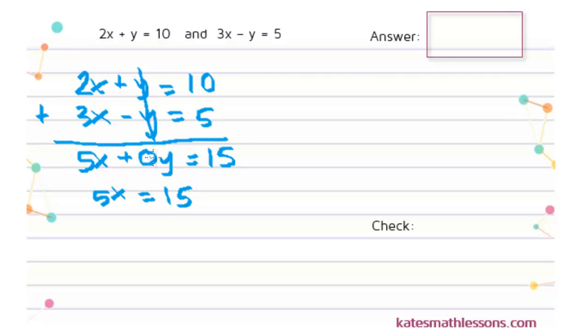So I can rewrite this. I can get rid of this 0Y because that's just 0. And this leaves me an equation that I can solve for X. So I can undo this multiplying by 5 by dividing both sides by 5. That tells me the X equals 3.